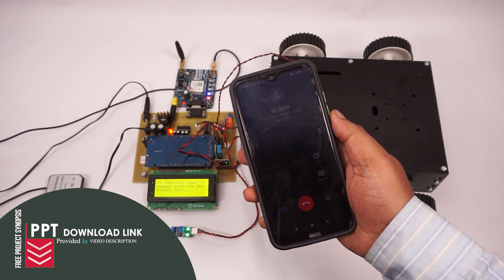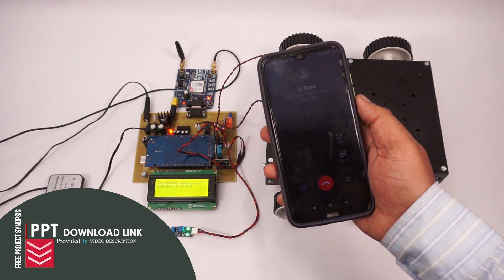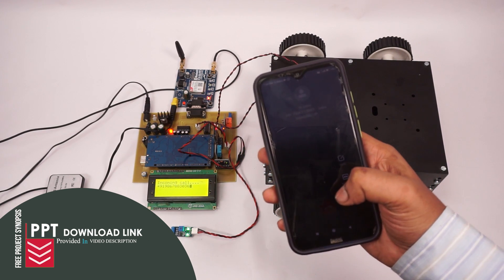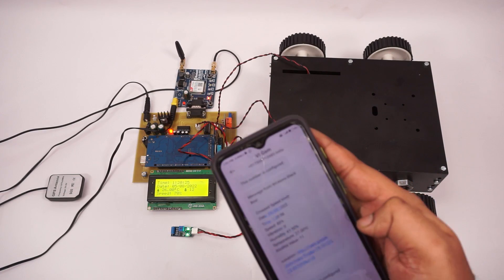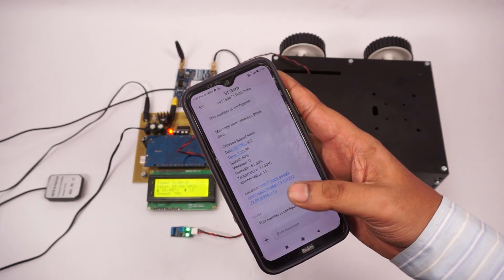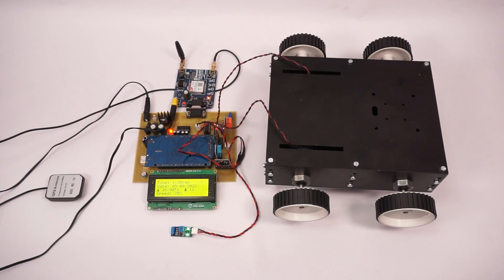And once that is done, our number will be registered as the authorized number. So whenever anything happens, the SMS will be sent on this particular registered number. As you can see, we got an SMS saying that this number has been configured.